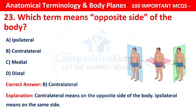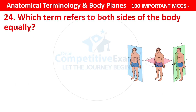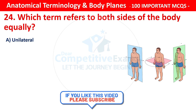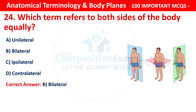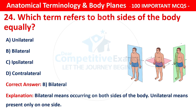Question number 24: Which term refers to both sides of the body equally? Options are: unilateral, bilateral, ipsilateral, or contralateral. The correct answer is B — that is bilateral. Bilateral means occurring on both sides of the body. Unilateral means present on only one side.